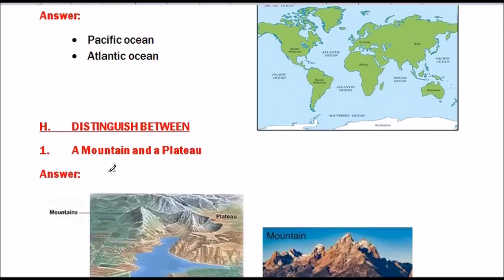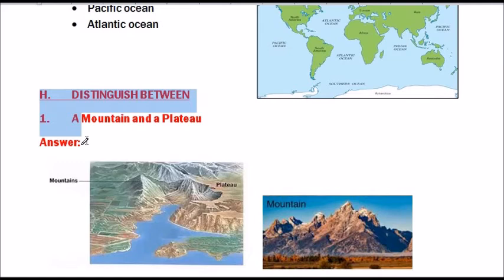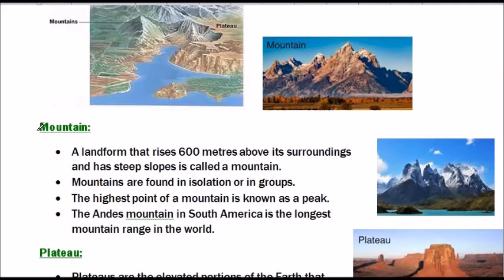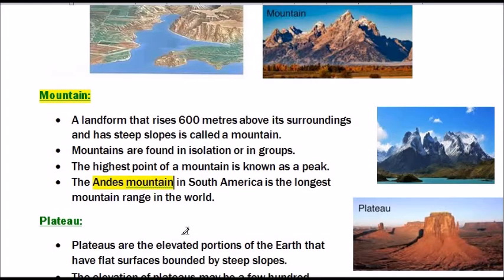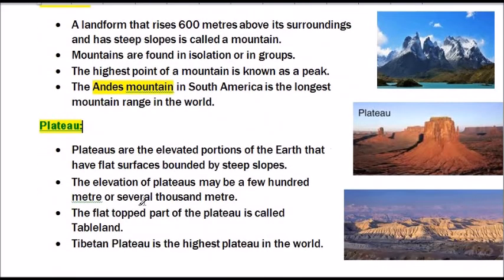Moving to question H: Distinguish between. First: a mountain and a plateau. A mountain is a landform that rises 600 meters above its surroundings and has steep slopes. Mountains are found in isolation or in groups. The highest point of a mountain is known as its peak. The Andes Mountain in South America is the longest mountain range in the world.